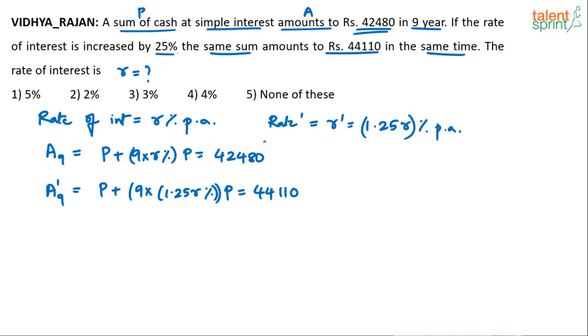So basically two equations. This is equation number one, this is equation number two. There are two unknown values here. Eventually, what we want is the rate of interest R. Now when I subtract these two, what do we get? P and P gets cancelled. If you take nine common, 1.25R minus 1R is 0.25R. 0.25 into 9 will be 2.25. So eventually we get 2.25R percentage of P is equal to 44,110 minus 42,480. It will be equal to 1630.